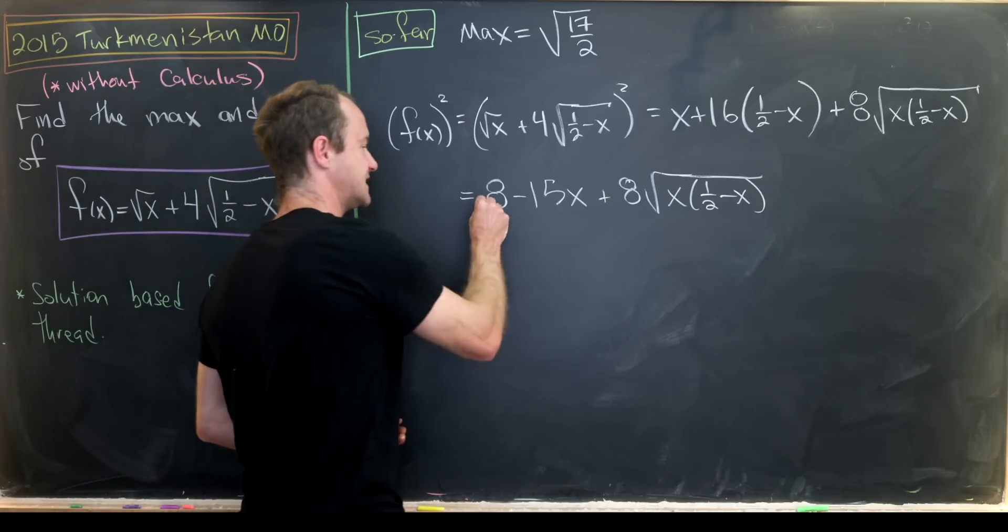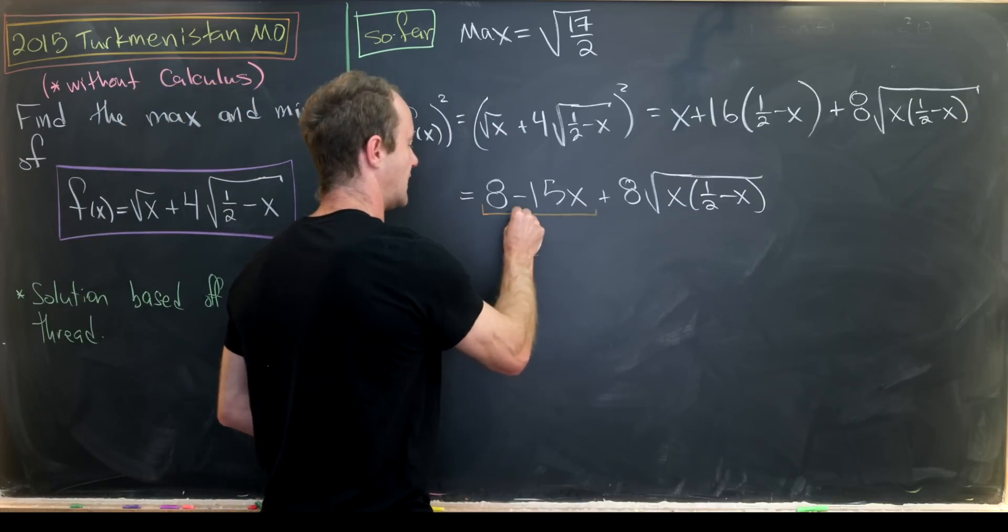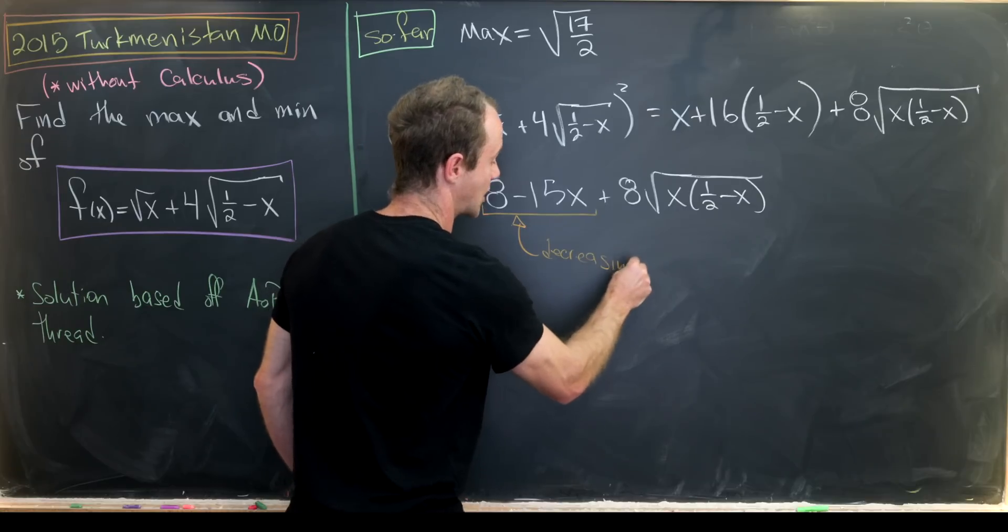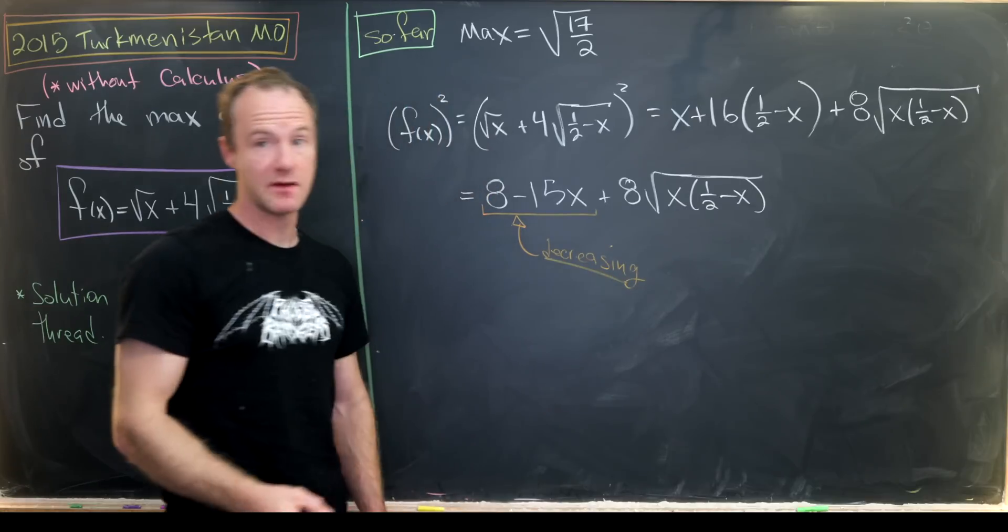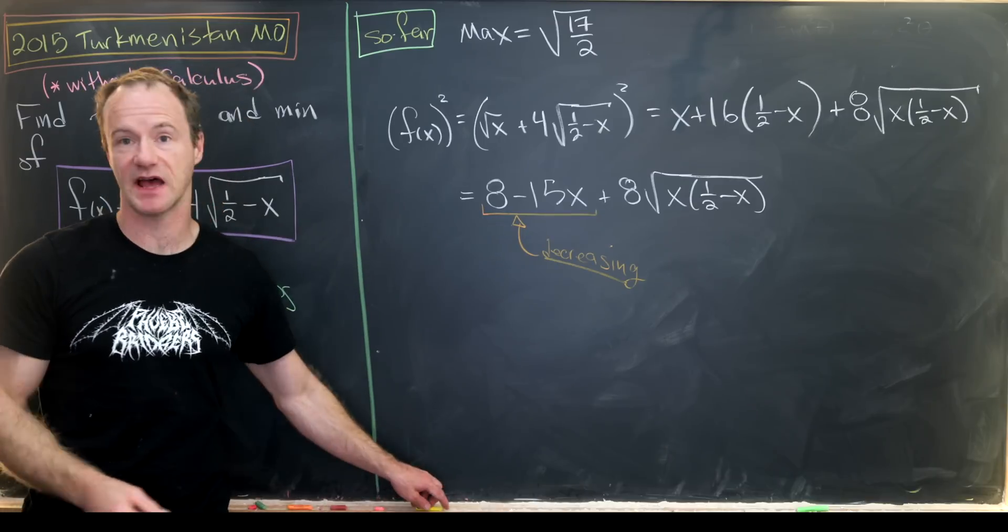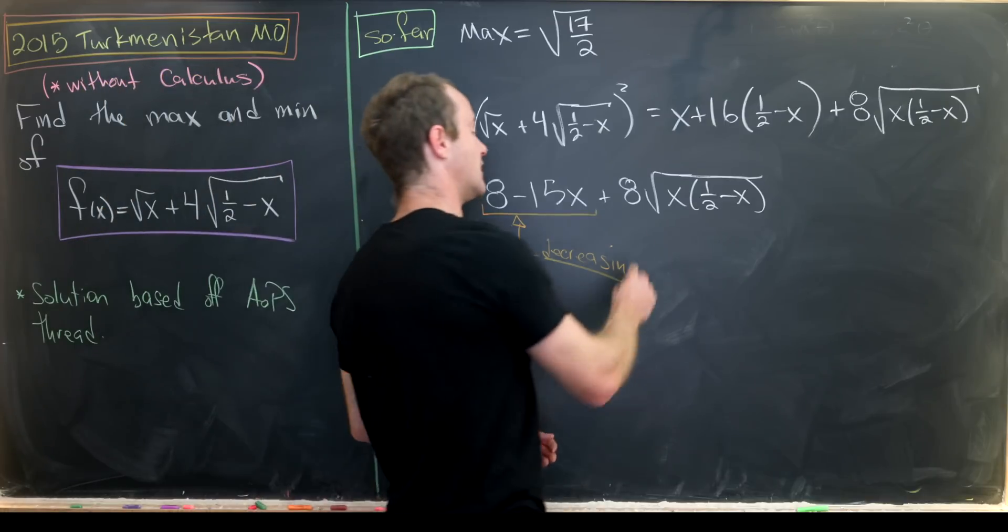So now simplifying, we'll have 8 minus 15x plus 8 times the square root of x times one half minus x. And now notice that this stuff that I'm aligning in orange is decreasing. So if we're going for the minimum value, we want to plug in the largest possible value of x as possible.